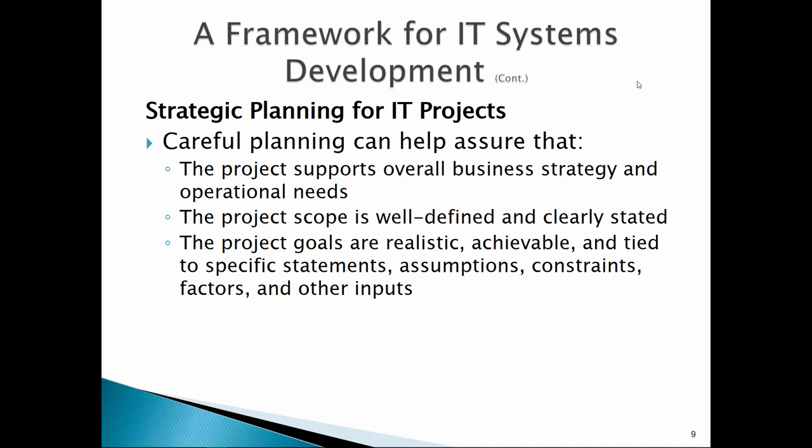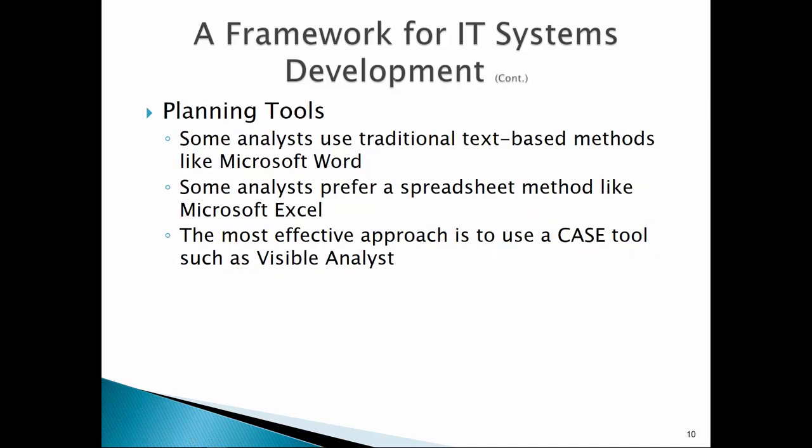Project goals: are they realistic? Are they achievable? They need to be tied to specific statements, assumptions, and constraints. My systems analysis teacher used a great example from life: just because one woman can have a baby in nine months does not mean nine women could have a baby in one month. That really clears it up — there are realistic constraints on projects and on our ability to create things. Do we have the right people? Do we have enough time? Do we have enough financial resources? We really need to look at all the factors surrounding the success of a project.